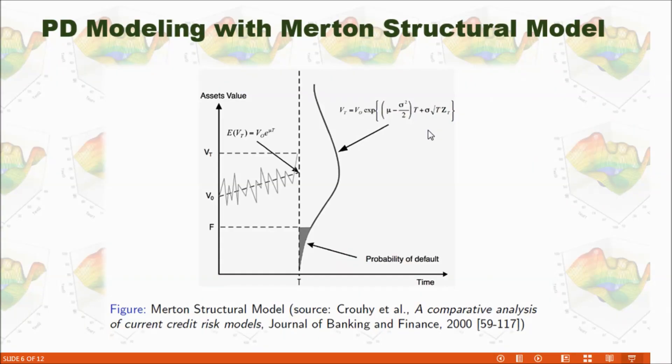Now, let's decide the probability of default according to Merton's structure model. In this model, it compares the asset of the company with certain default point. In this graph, you can see the company's asset starting from V0. Over time, it will increase.